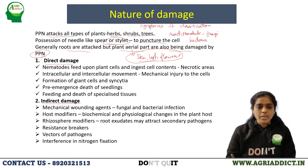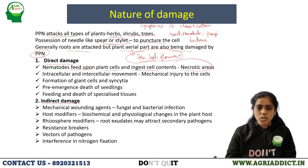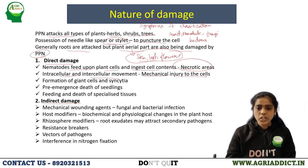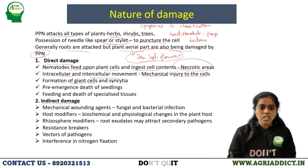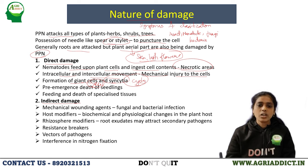In direct damage, as nematodes feed upon plant cells and ingest the cell contents, the cell becomes devoid of cytoplasm, causing death of cells and leading to the formation of necrotic areas. Intracellular and intercellular movement of nematodes within the plant tissue causes mechanical injury. Specialized feeding areas like giant cells in case of root-knot nematodes (Meloidogyne) and syncytia in case of cyst nematodes are formed to make feeding efficient.